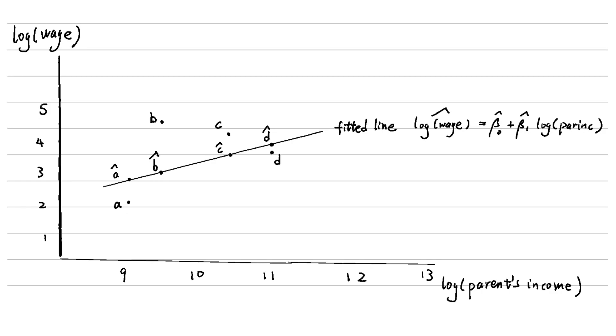Similarly, point B represents another actual value of the worker's wage we observed, while point B hat is the fitted value we compute using the OLS estimators at the corresponding parent income. We see that point C and D are the actual values and the C hat and D hat on the fitted line are the fitted values.